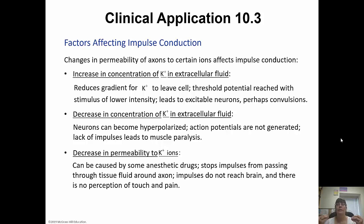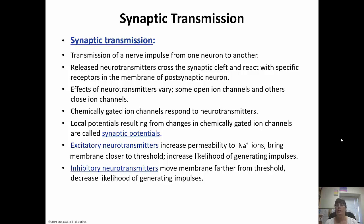With anesthetic drugs, the impulses don't reach the brain, so you're not able to perceive pain. Transmission of a nerve impulse from one neuron to another is called synaptic transmission. The axon hillock generates the action potential, which travels down the axon as a nerve impulse. Once it reaches the axon terminal — the synaptic knob — there's an influx of calcium ions. That triggers the secretory vesicles carrying neurotransmitters to fuse with the membrane and release their contents through exocytosis. The neurotransmitters then diffuse across the synaptic cleft and bind with receptors on the postsynaptic neuron.